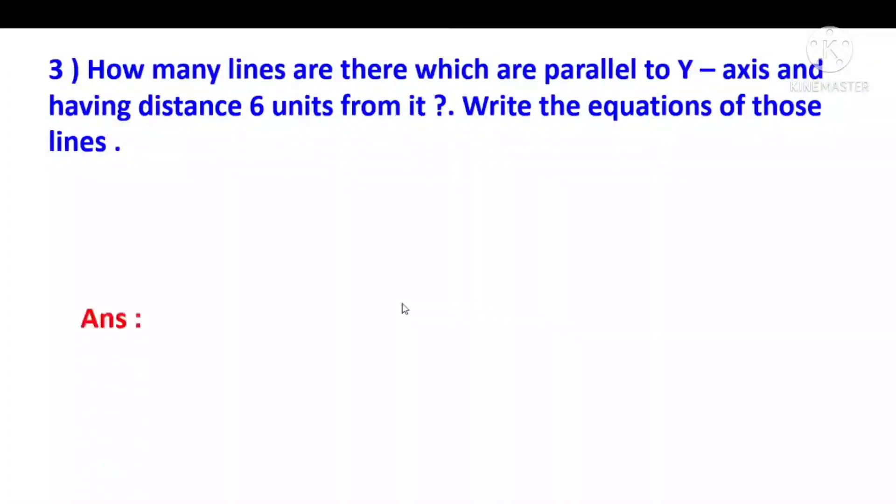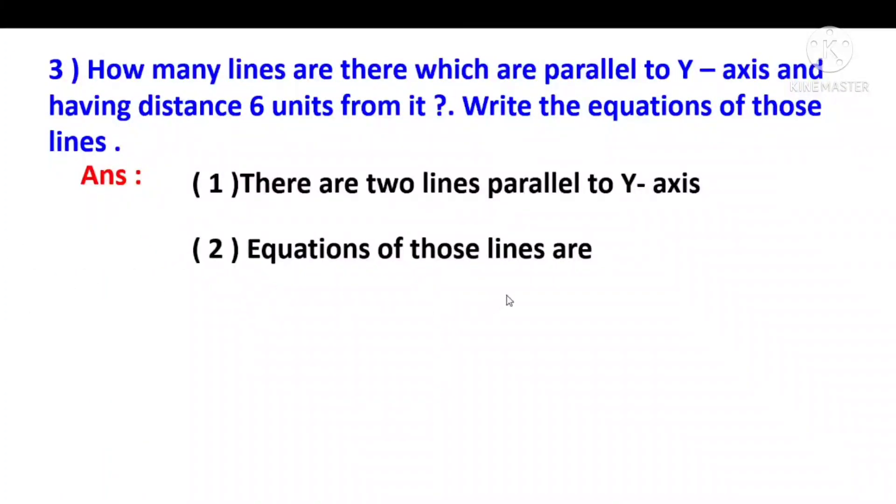There are two lines parallel to y-axis. The equations are: one right side line is x is equal to 6, and left side is x is equal to minus 6. The y-axis is here, plus 6 here and minus 6 there. Equations of those lines are x equals 6 and x equals minus 6.